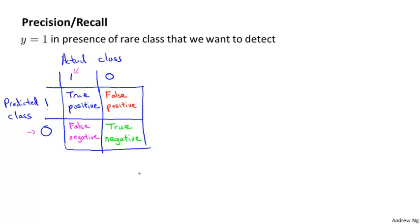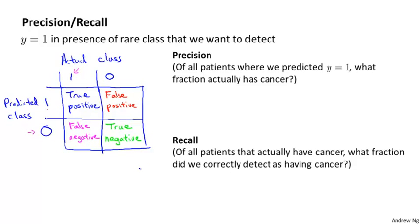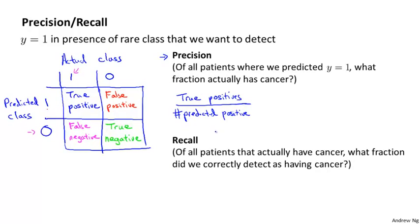Here's a different way of evaluating the performance of our algorithm: we compute two numbers. The first is called precision. Of all the patients where we predicted that they have cancer, what fraction of them actually have cancer? Precision is defined as the number of true positives divided by the number predicted as positive — that is, true positives divided by true positives plus false positives.